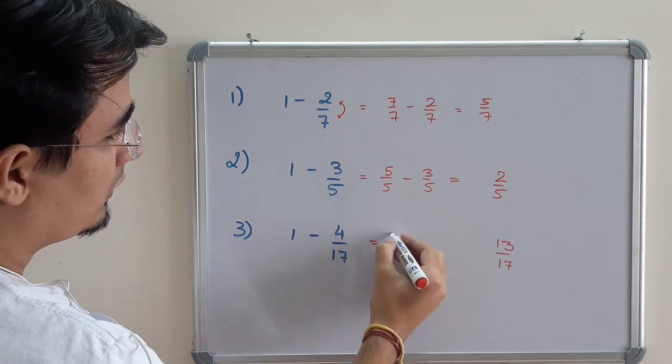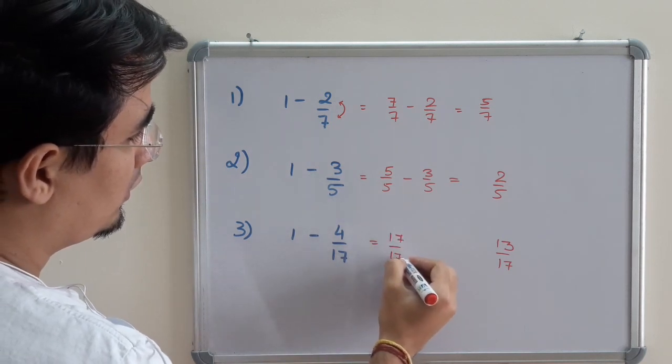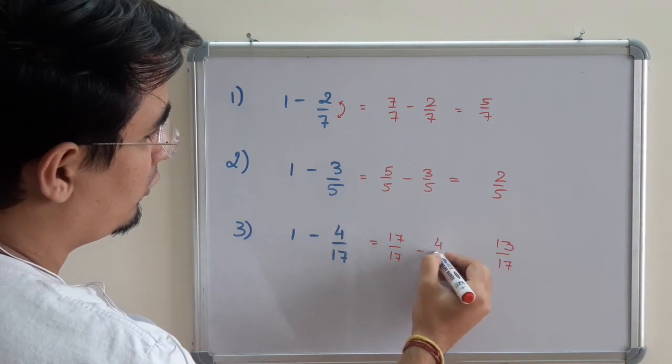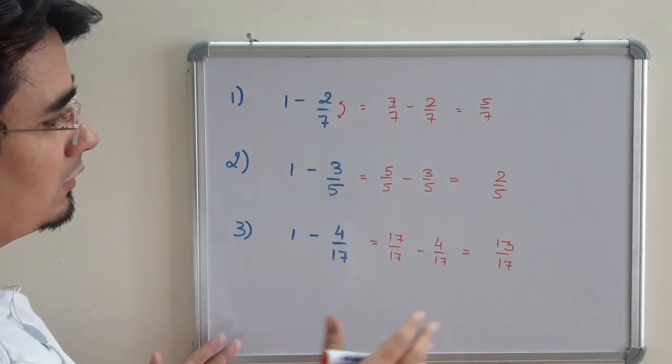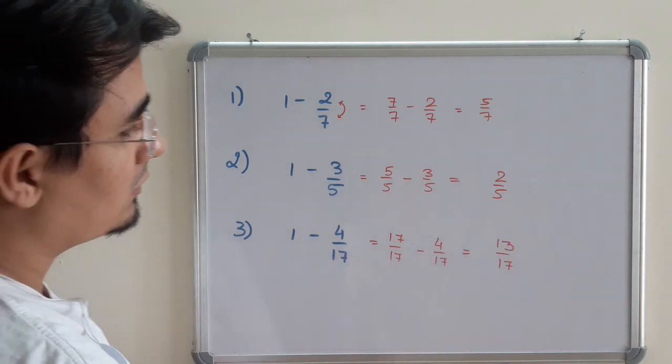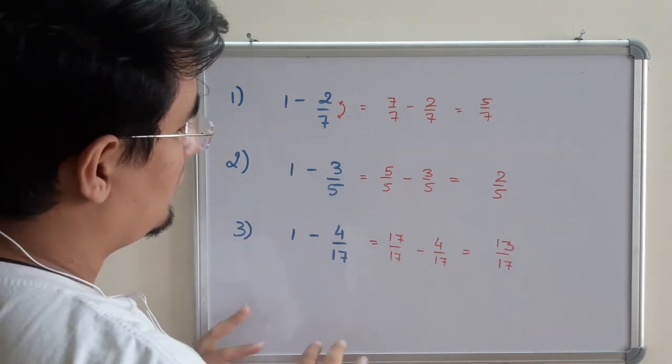Similarly, 1 can be written as 17 by 17 minus 4 by 17. So 17 minus 4 is 13 by 17. So this is a basic understanding.